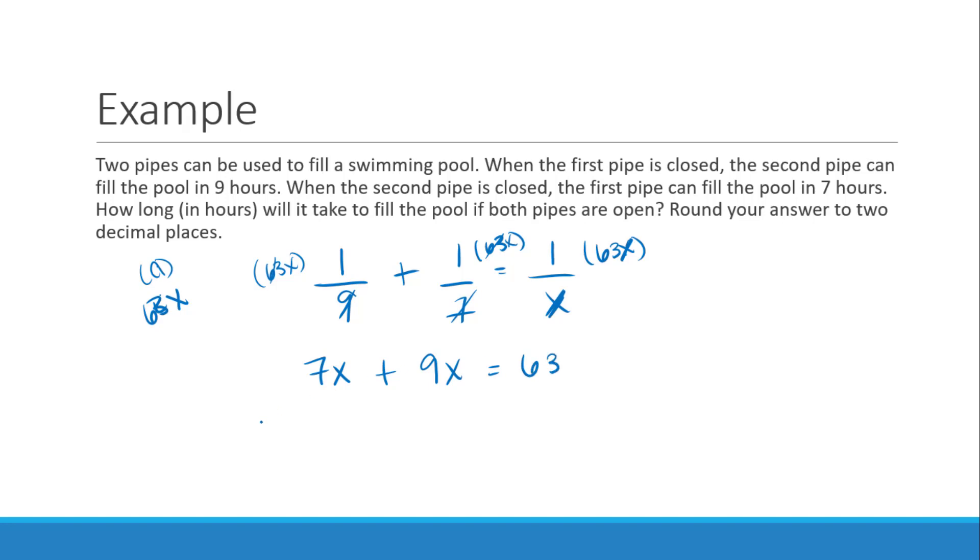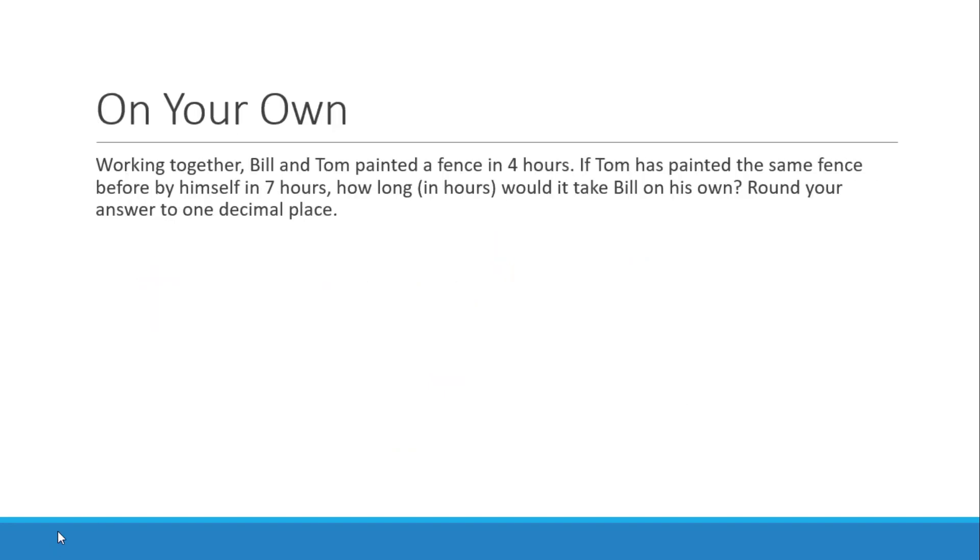So what I can do is I can add 7 and 9 together, so it's going to be 16x is equal to 63. I'm going to do 63 divided by 16, because it tells me it wants me to round to two decimal places. So both of the pipes working together can fill the pool in three point, it says round two decimal places, so we'll say 3.94 hours.